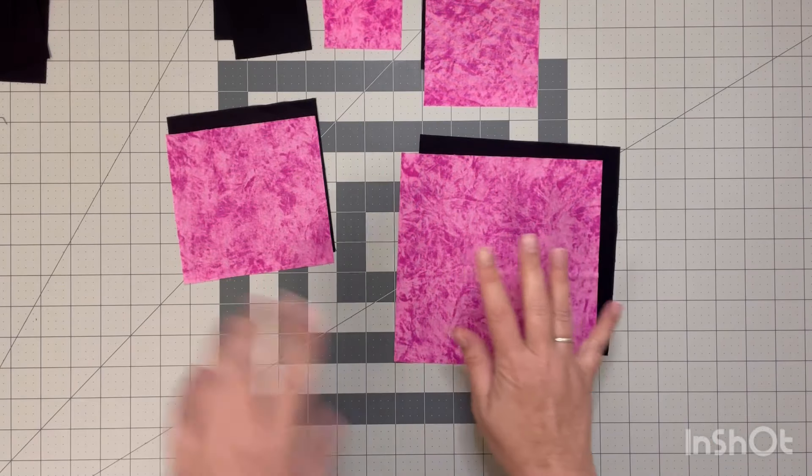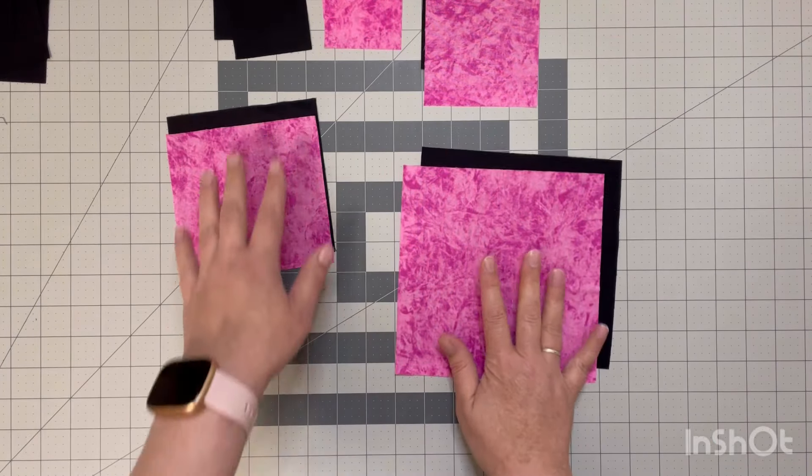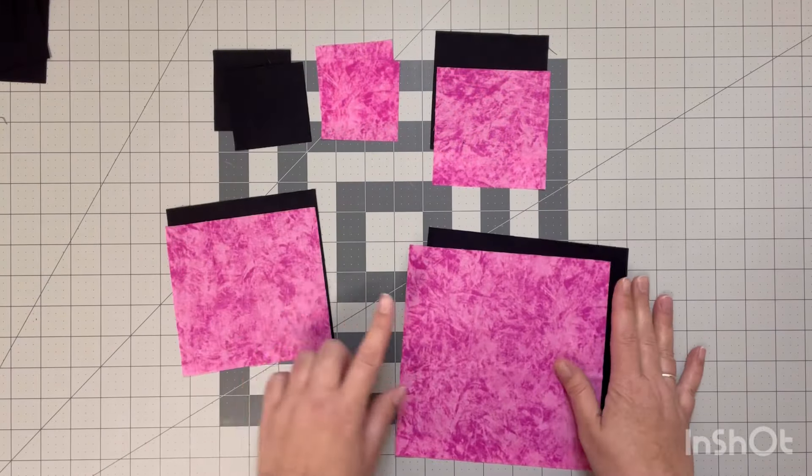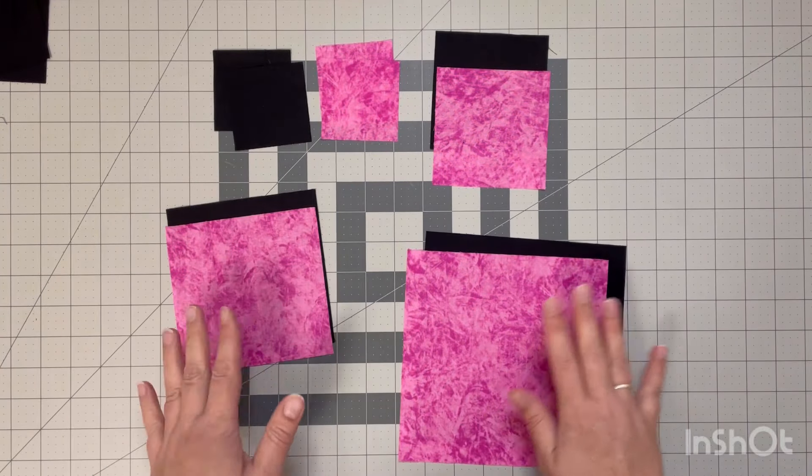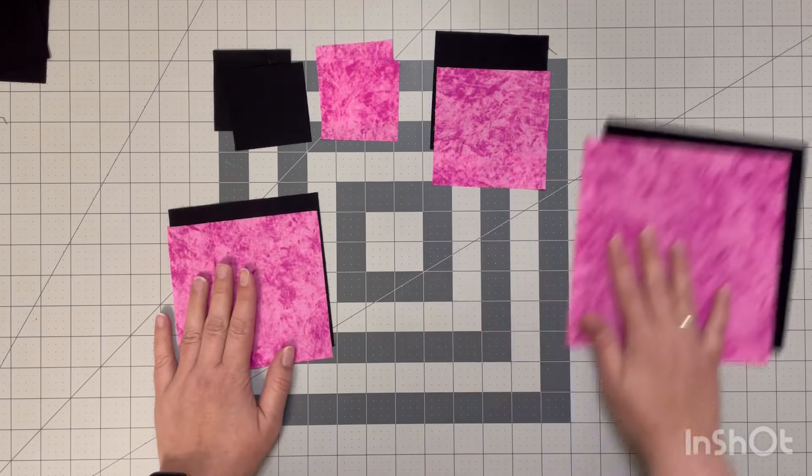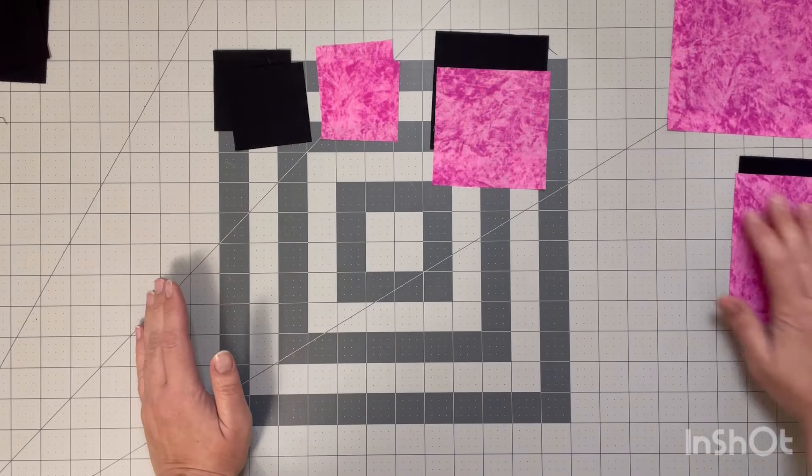These are some really odd sizes and I will have all the measurements in the description box below. To start we're just going to put our bigger ones to the side. We do need to cut those on the diagonal later on, but we'll just start with our smallest pieces.